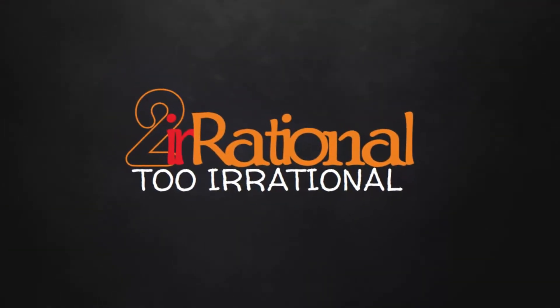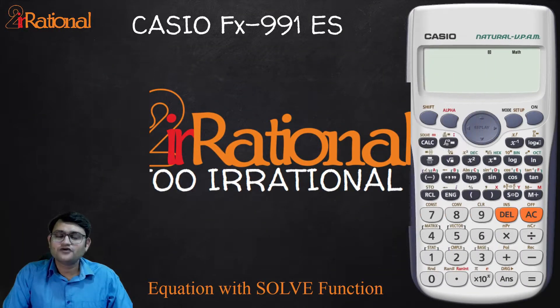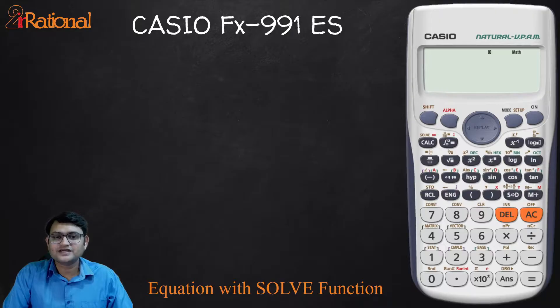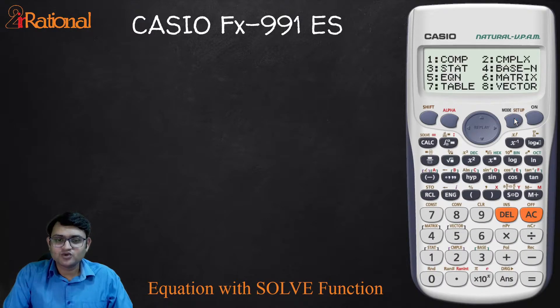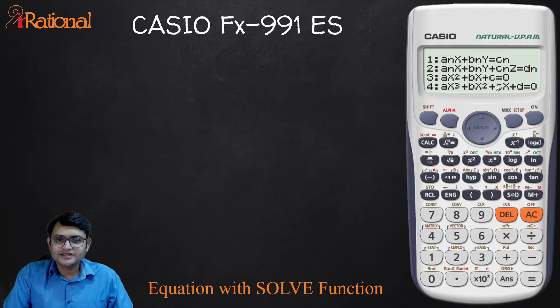we are going to see how to solve equations using the solve function of Casio FX 991 ES+. We can solve almost any type of equation with this function, but in our calculator, certain equations can be solved using special functions like in this mode, we have equation mode 5 and these are the types of equations: simultaneous equations, then we have quadratic equations, cubic equations.